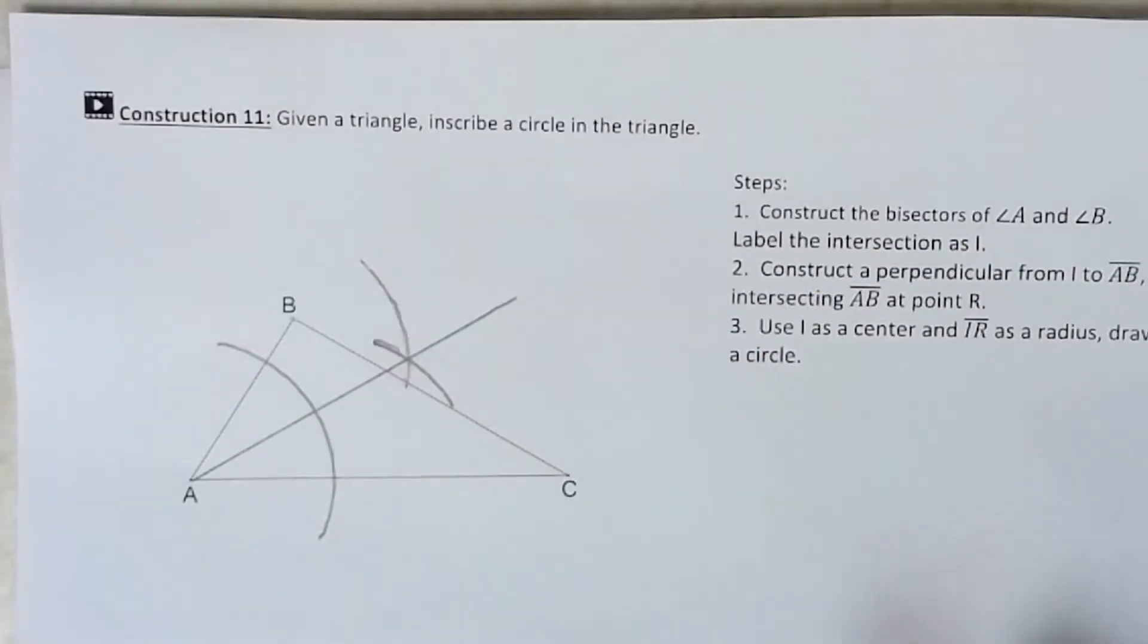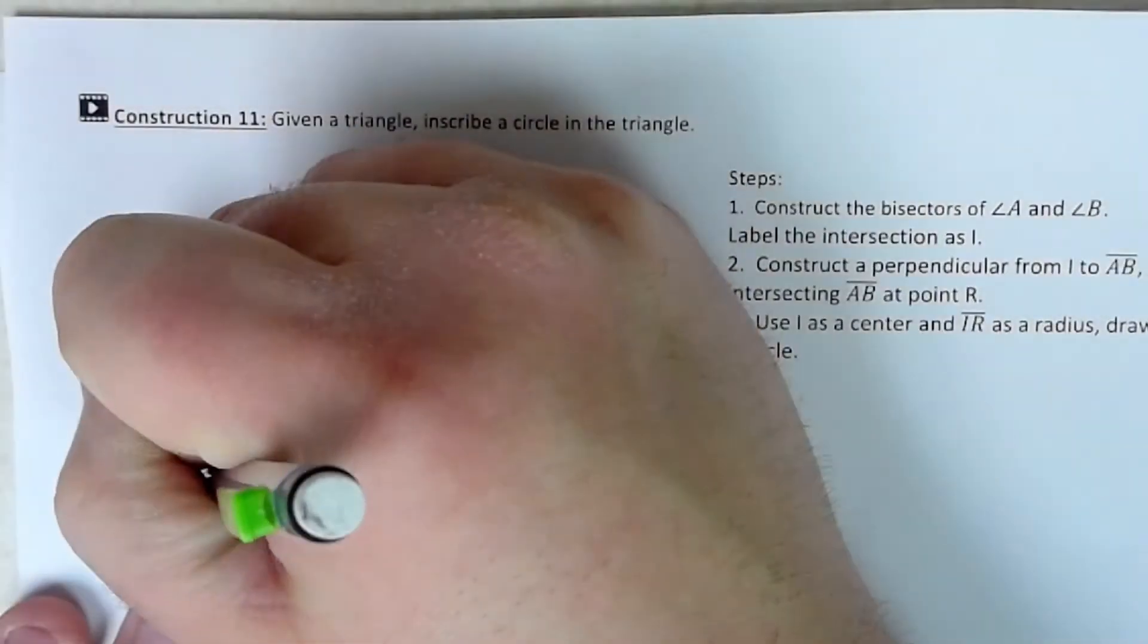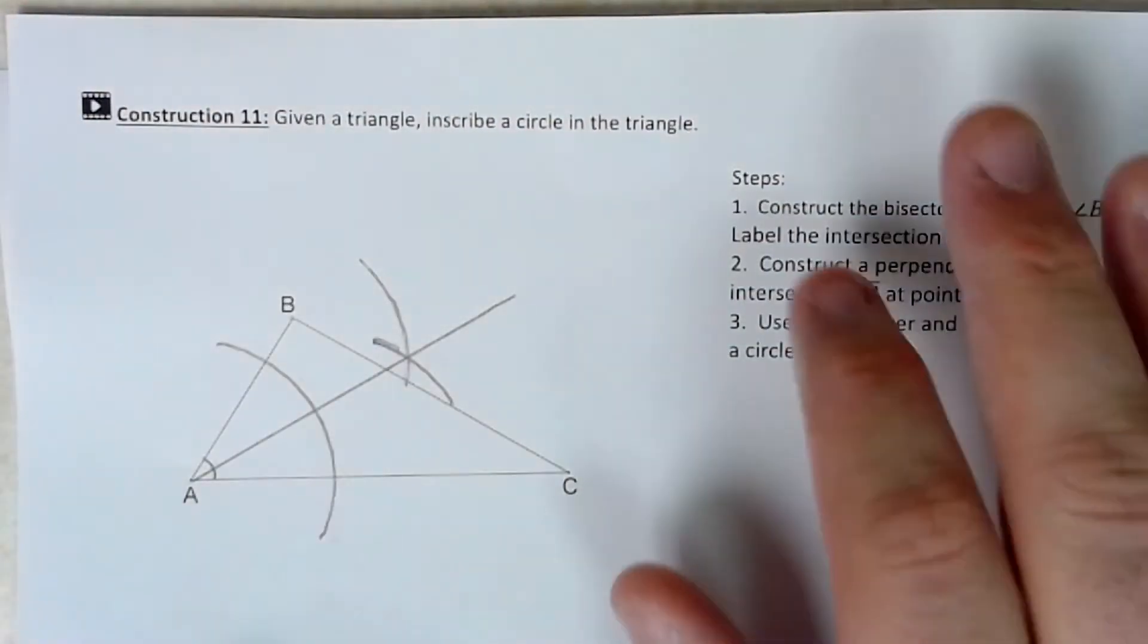So there's my angle bisector for A and I'm going to go ahead and do the same thing but for point B.